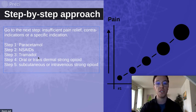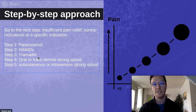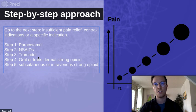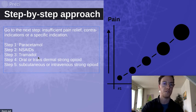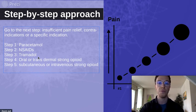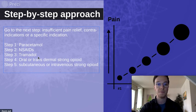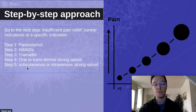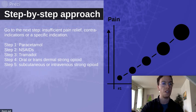The next step is tramadol, which is a weak opioid. It's preferably combined with NSAIDs and paracetamol to enhance the effect and to lower the amounts used, so you experience fewer side effects from the tramadol. The next step is oral or transdermal strong opioids, mostly morphine or fentanyl. The last step is subcutaneous or intravenous strong opioids, mostly morphine — this is for when experiencing really a lot of pain.